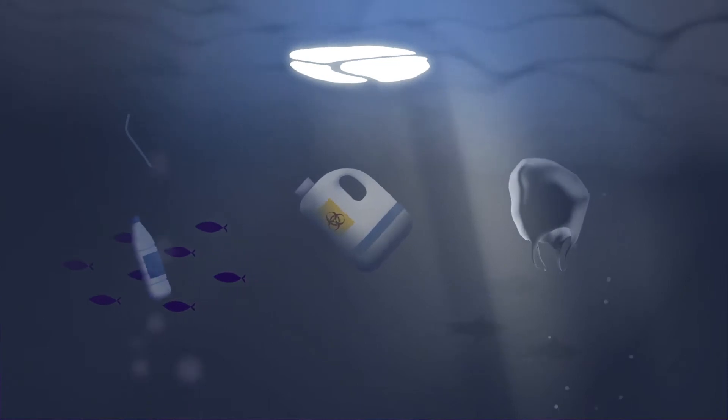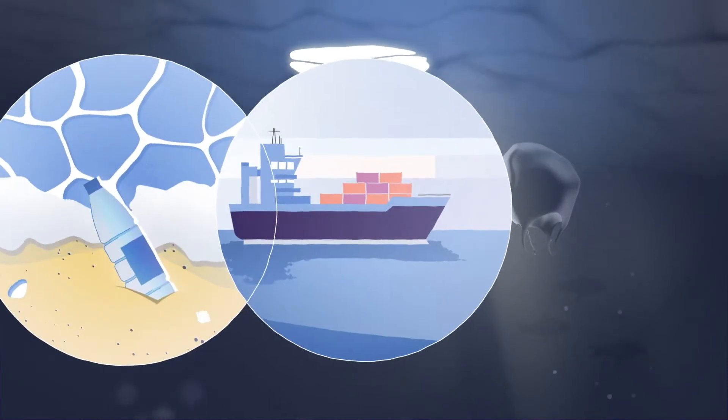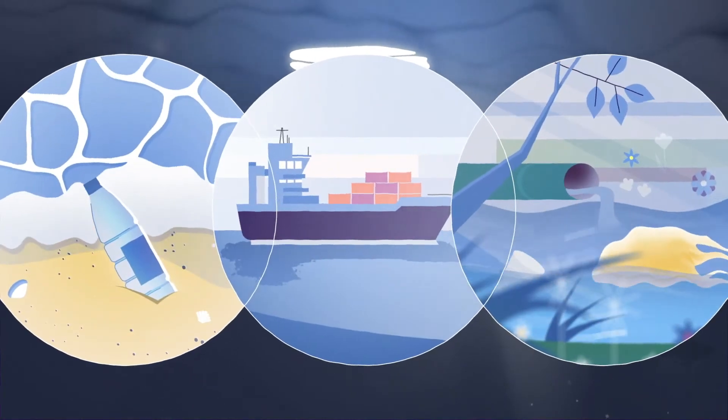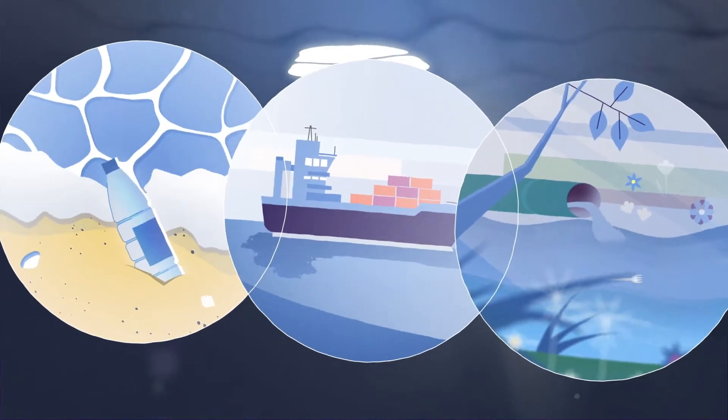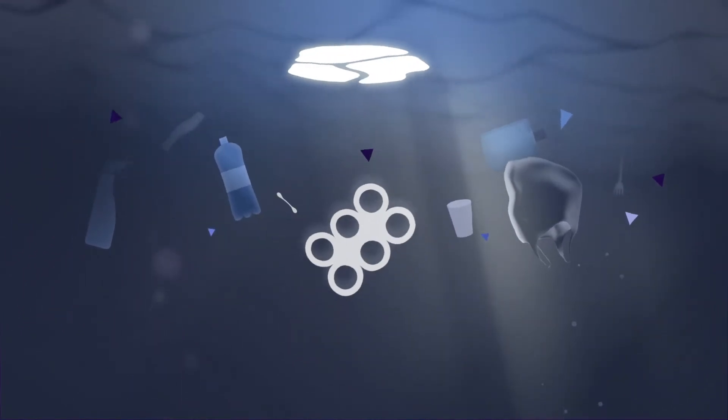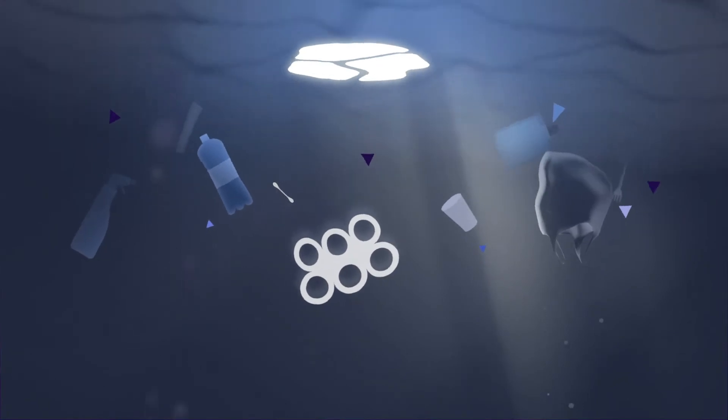Marine litter is particularly difficult to regulate, as it can originate from diverse land and sea-based sources, both within and outside of a state, and the seas and oceans polluted are not governed unilaterally.